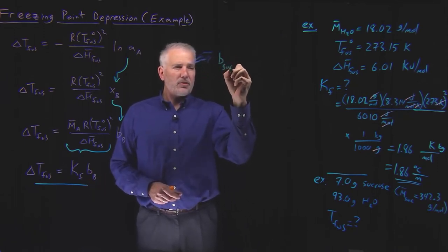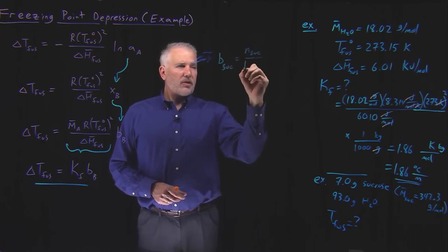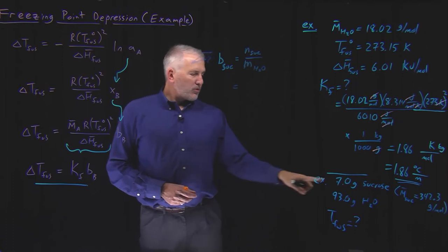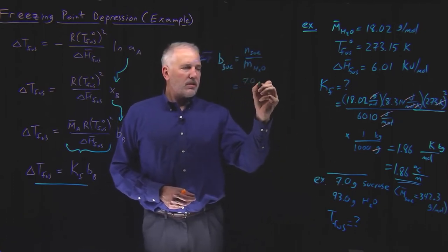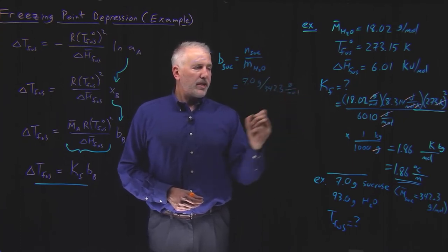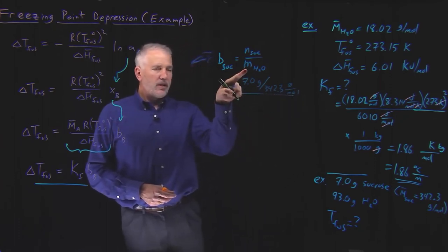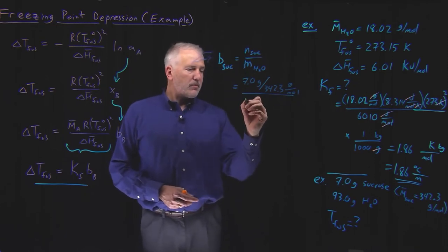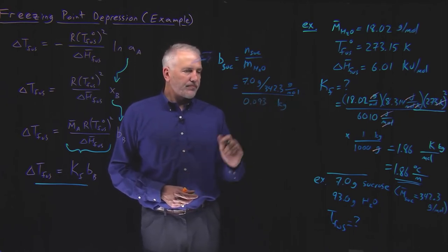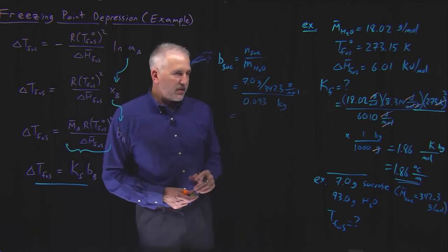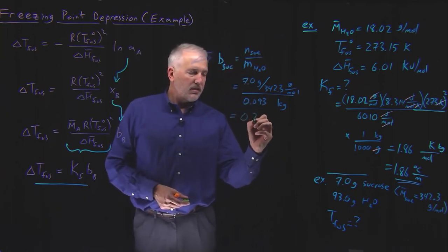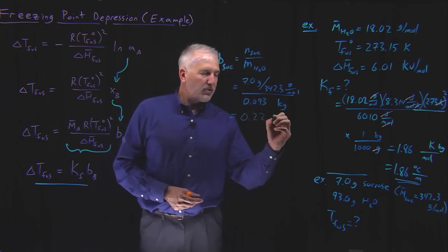The first step is to calculate the molality of that solution. The molality of sucrose equals moles of sucrose divided by kilograms of solvent. Moles of sucrose: we know the molar mass, so that's 7 divided by 342.3. Divided by the mass of the solvent — 93 grams, or 0.093 kilograms. Doing that calculation, 7 divided by 342.3 divided by 0.093, gives us a molality of 0.22 molal, or 0.22 moles per kilogram.